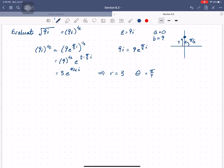So we're going to go back to rectangular form. So we remember that a equals r times the cosine of theta, which is 3 times the cosine of pi over 4, which is 3 root 2 over 2.